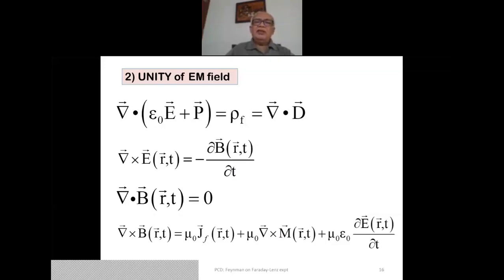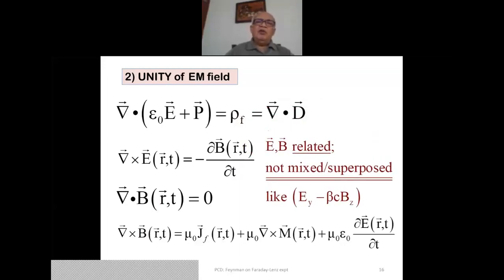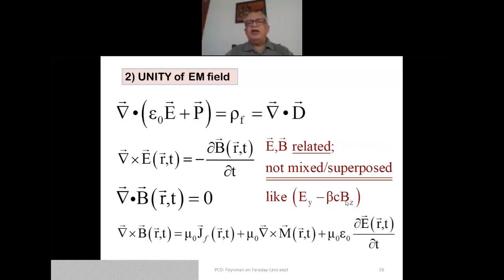The unity of the electric and magnetic phenomena is beautifully displayed in Maxwell's equations. You have vector functions of electrical properties connected to vector functions of magnetic properties. Yet there is an even more beautiful way of demonstrating this unity: you can actually superpose components of electric and magnetic fields — for instance, E_y minus a constant times B_z — taking a component of the magnetic field and adding it to a component of the electric field. This is a superposition of electric and magnetic phenomena because they are essentially the same thing.